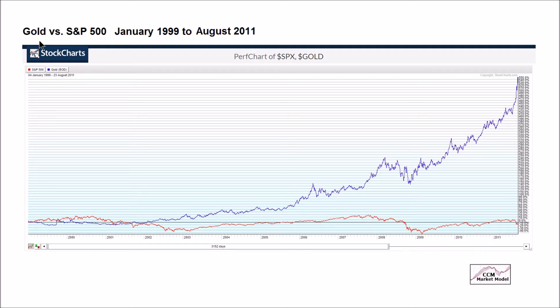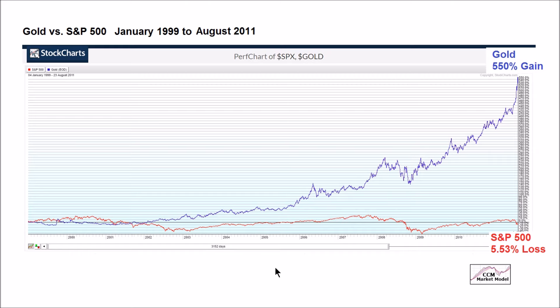Relative to stocks and bonds, the gold market is relatively small and not really promoted — you may have been told that gold is a stupid investment. Let's look at why we consider gold to be one of many options. This chart from StockCharts.com shows the S&P 500 in red from January 4th, 1999 to August 23rd, 2011. Between those dates, gold went up 550%. What did the S&P 500 do over the same period? It lost 5.53%.